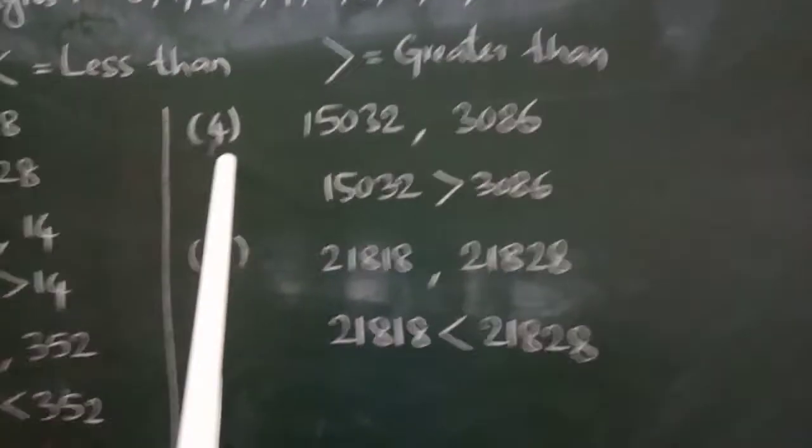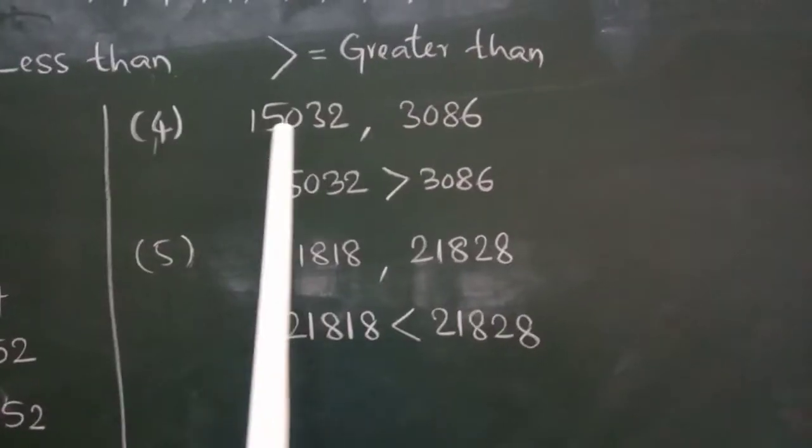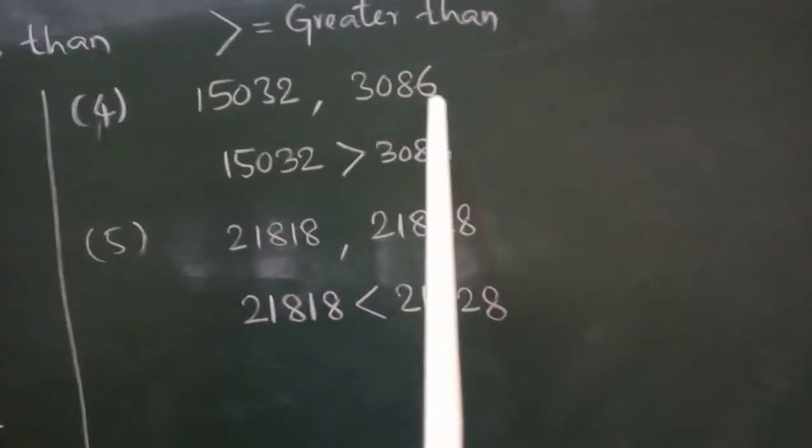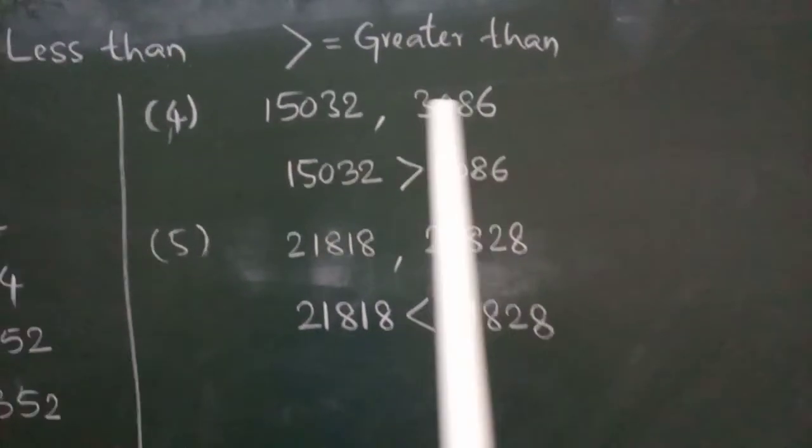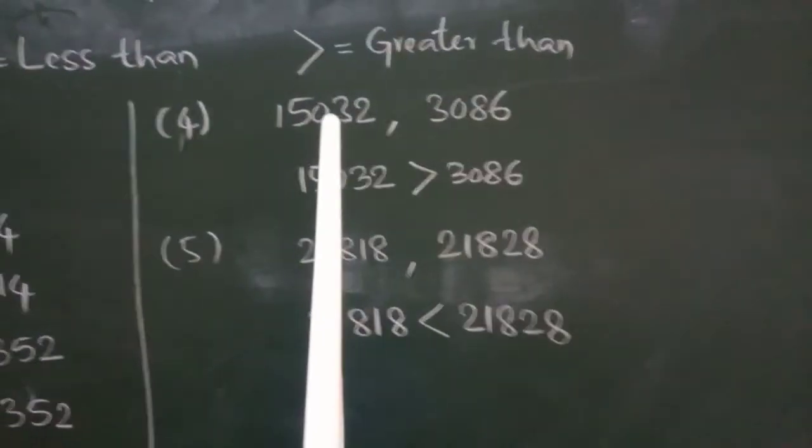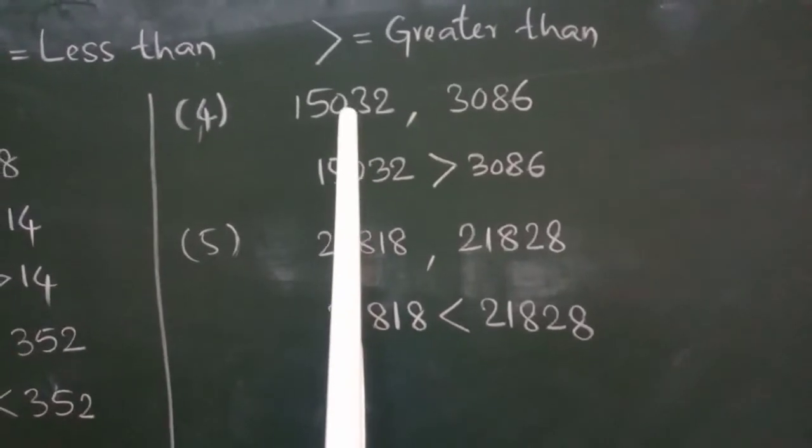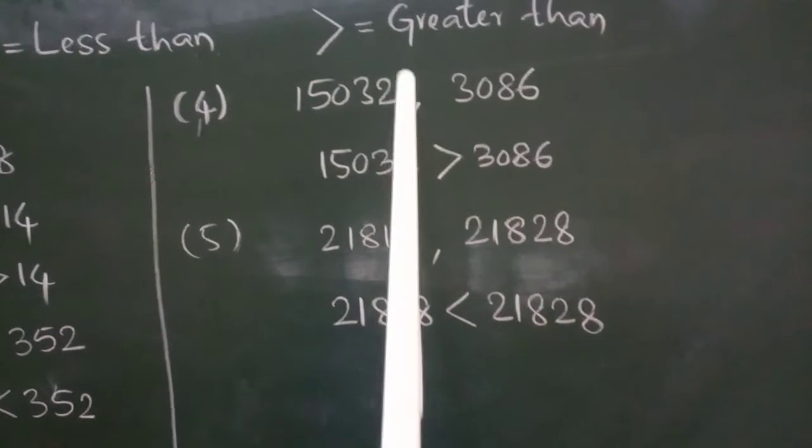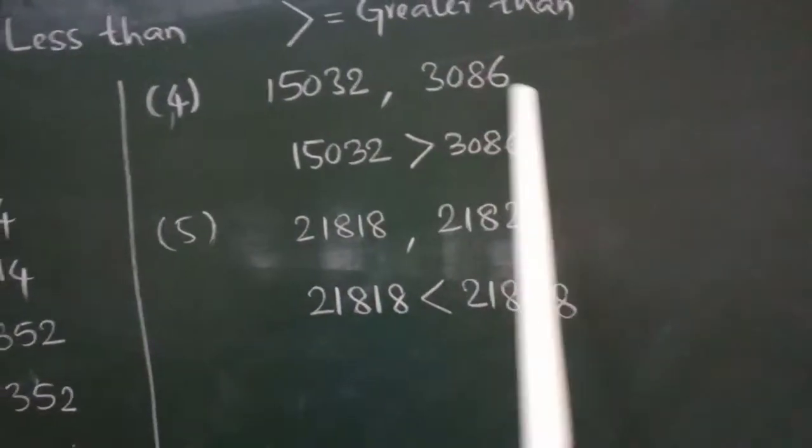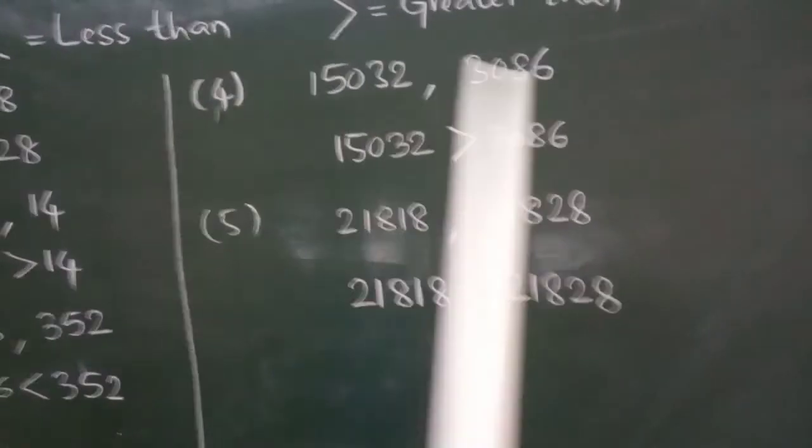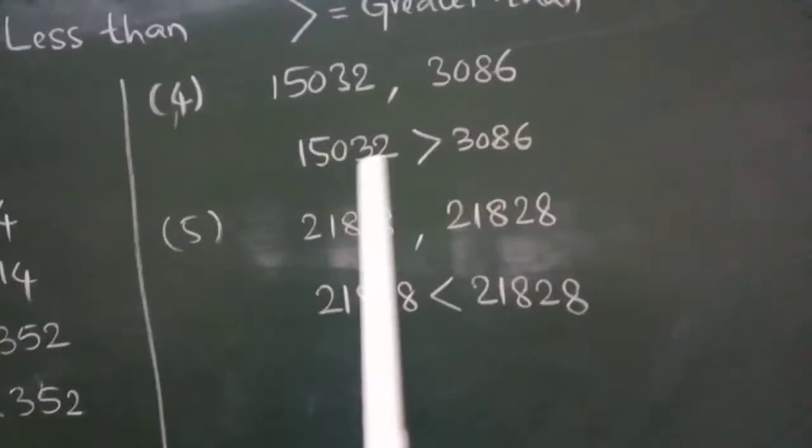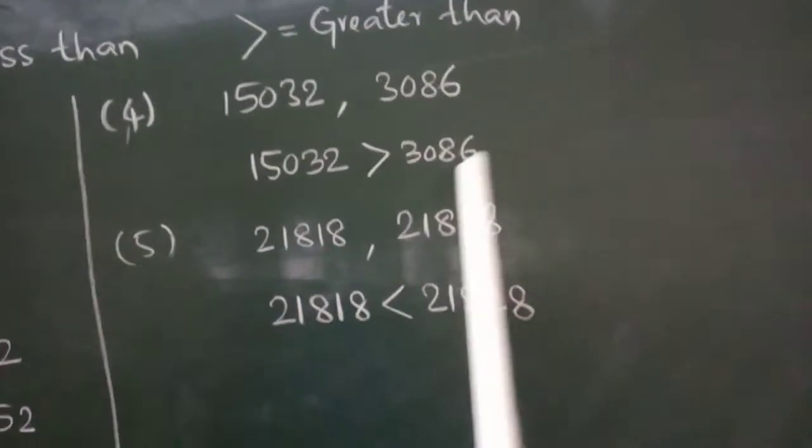And example 4. 15,032. This is a 5-digit number. 3,086. This is a 4-digit number. Which number has more digits? That number is a bigger number. So, this has 5 digits. This has 4 digits. This is bigger. So, 15,032 is greater than 3,086.